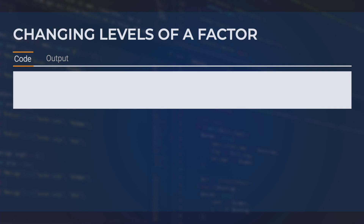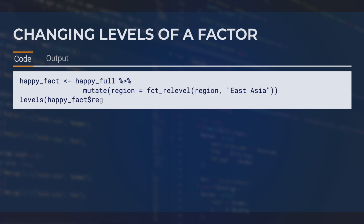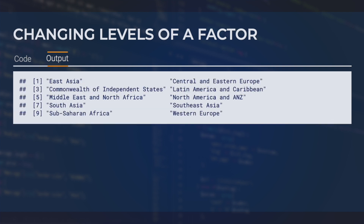It is sometimes beneficial to change the order of the levels of a factor. We can do this by using a function called fct_relevel, which is from the forcats package — we will discuss this package in more detail in another video. The code here uses fct_relevel to set East Asia as the first level and reassigns the output to happyFact. Now, when we apply the levels function to happyFact, we see East Asia is now the first level.